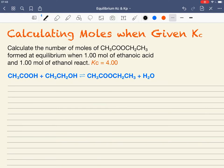This, in reality, is a more realistic example. If I know my Kc value and I know how much reactants I've got, how much product will I form at equilibrium?